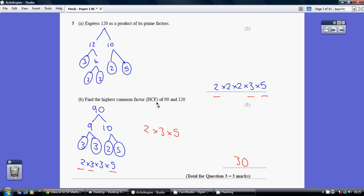Now to find the highest common factor of a couple of numbers, if you do the number tree for both, well we've obviously done it for 120 here, if we repeat a similar exercise for the 90, we get 2, 3, 3 and 5.